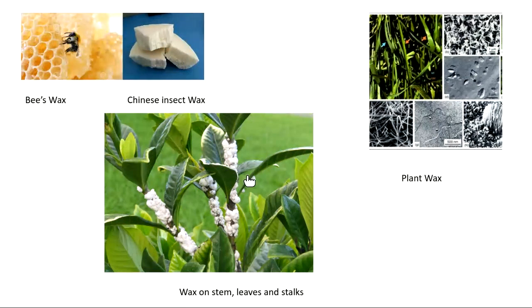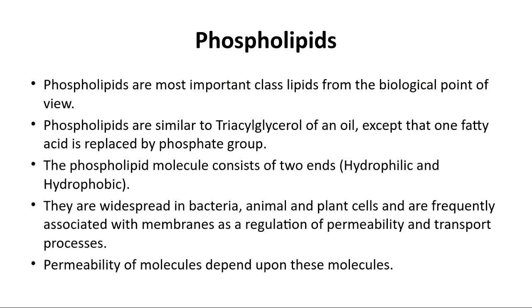These types of waxes are formed and can be helpful for plants and animals. Now we are coming to our last topic: phospholipids. According to the biological point of view, phospholipids are the most important class of lipids. They are present in the cell membrane of cells — the cell membrane is present over the cell to protect it.